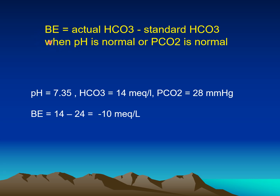There are two measurements of base excess or base deficit. The first is when the pH or partial pressure of carbon dioxide is normal: base excess equals the measured (actual) bicarbonate minus the standard bicarbonate. For example, with pH 7.35, bicarbonate 14, and CO2 28, the base excess equals measured minus standard bicarbonate — giving a base deficit of minus 10.